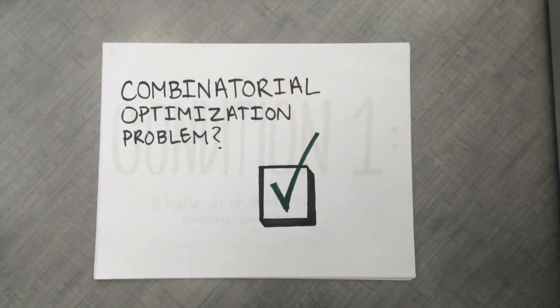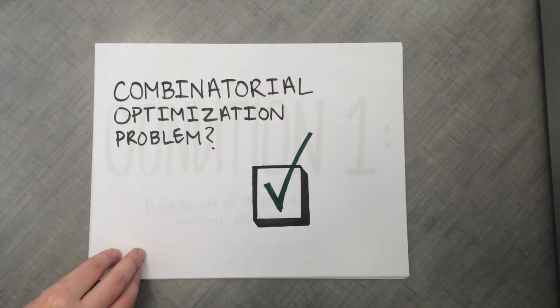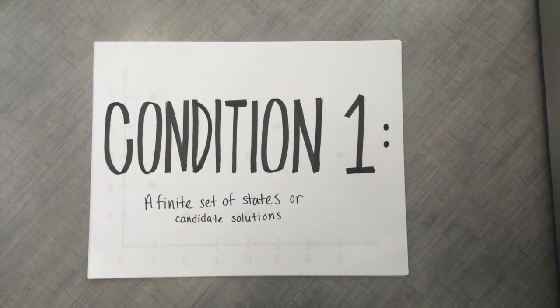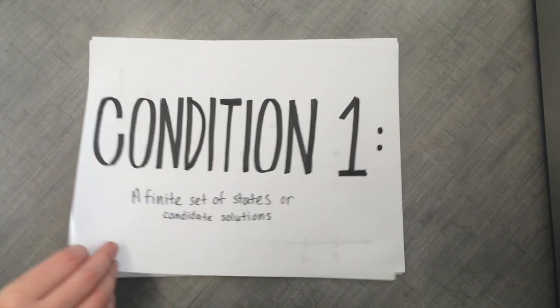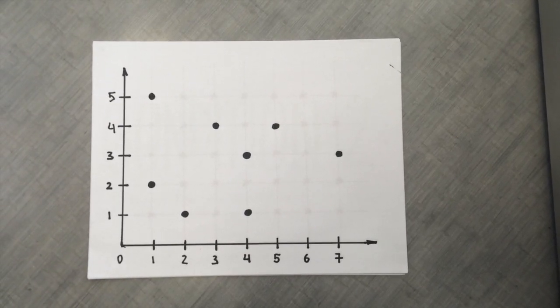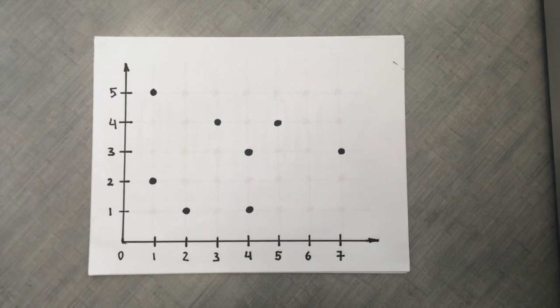The Euclidean p-center problem is a combinatorial optimization problem. Condition 1: We are looking for p number of centers, which are points with integer coordinates. We are limited to the section of the plane bounded within the demand points.